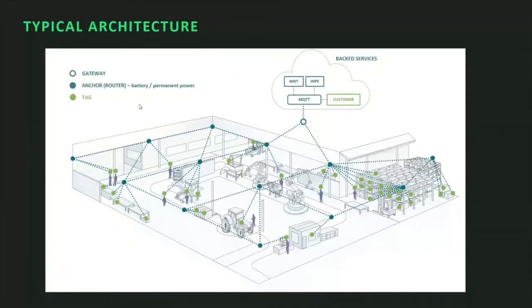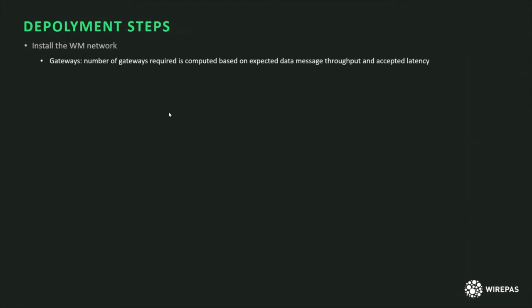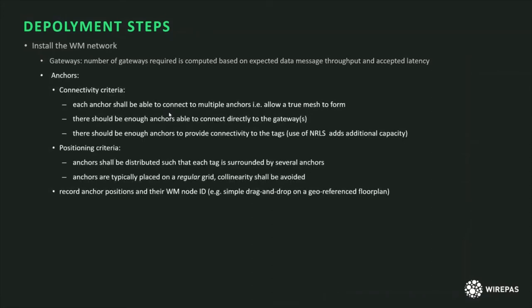This is a top view of a typical mesh network, showing routers in dark green, the tags, and the gateway communicating with the backend services. Let's go through the typical deployment steps a customer will take. First, you install the wireless network, typically starting with the gateways. The number of gateways is determined based on expected data message throughput and accepted latency. Redundancy is another criterion — with two gateways, the mesh will automatically adapt if one gateway is lost, stolen, or unplugged.